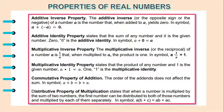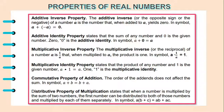Here are the different properties of real numbers. We have the additive inverse property. The additive inverse, or the opposite sign, or the negative of a number a, is the number that when added to a yields 0. In symbols, a plus negative a is equal to 0.